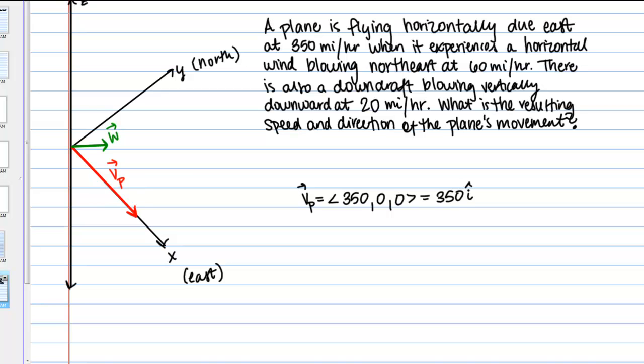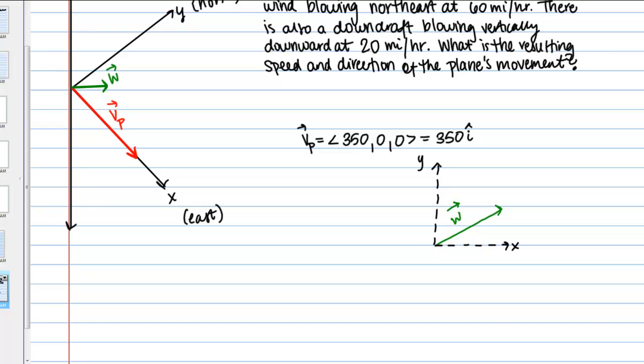Let me draw a close up of this W vector and the geometry that we're looking at here. Here's our W vector and then I've just simplified here with the X and the Y axes. We just said a second ago that northeast, once again Y is north and X is east, northeast meant a 45 degree angle.